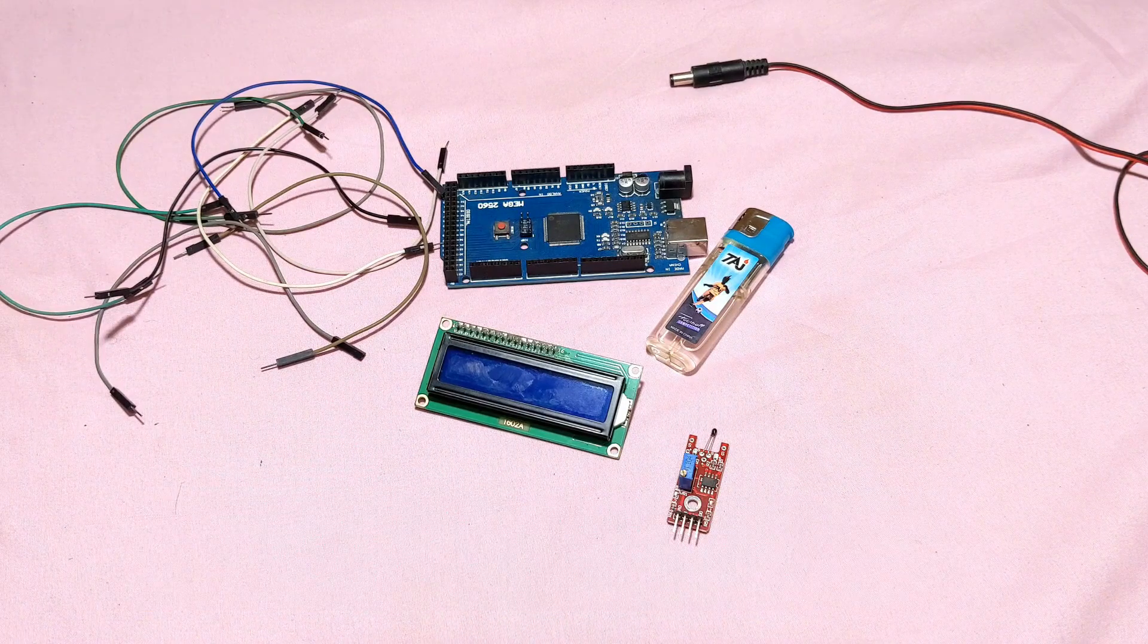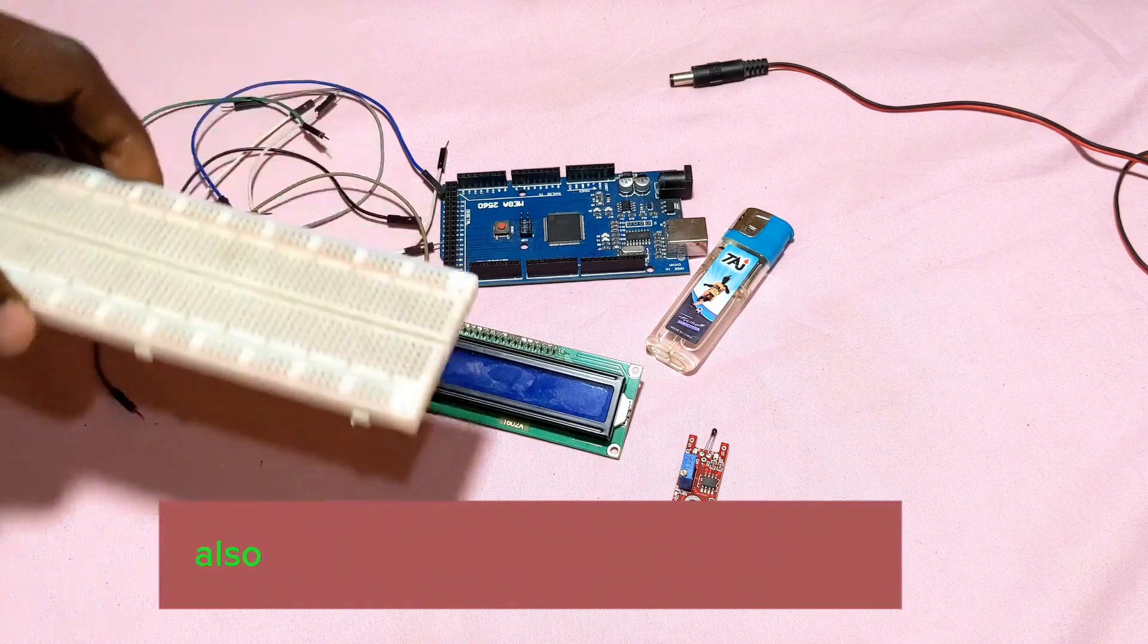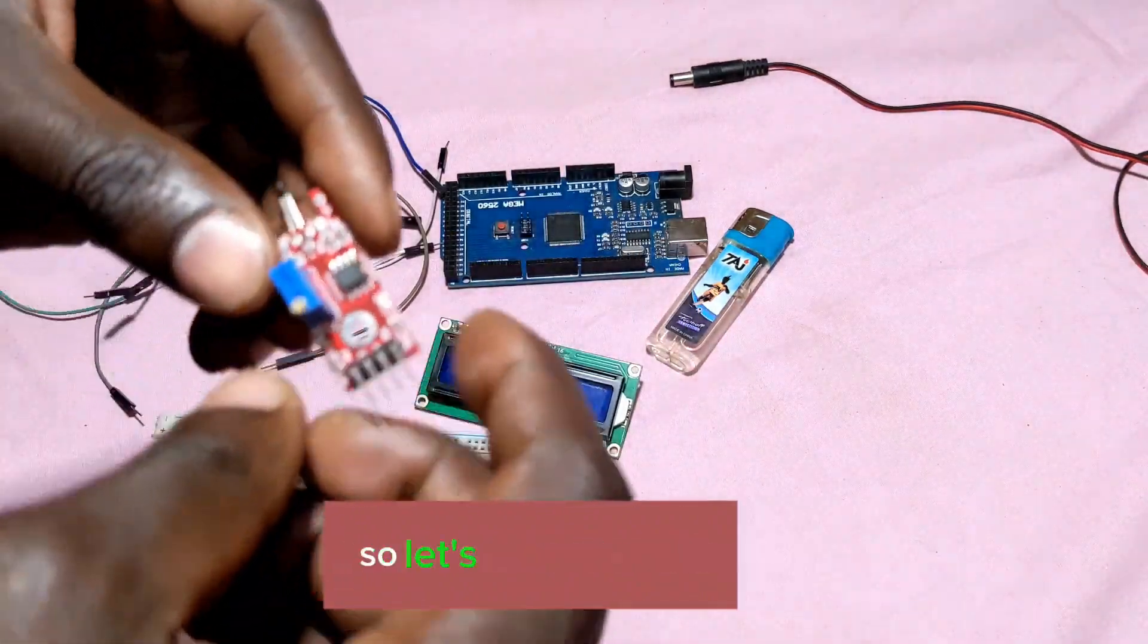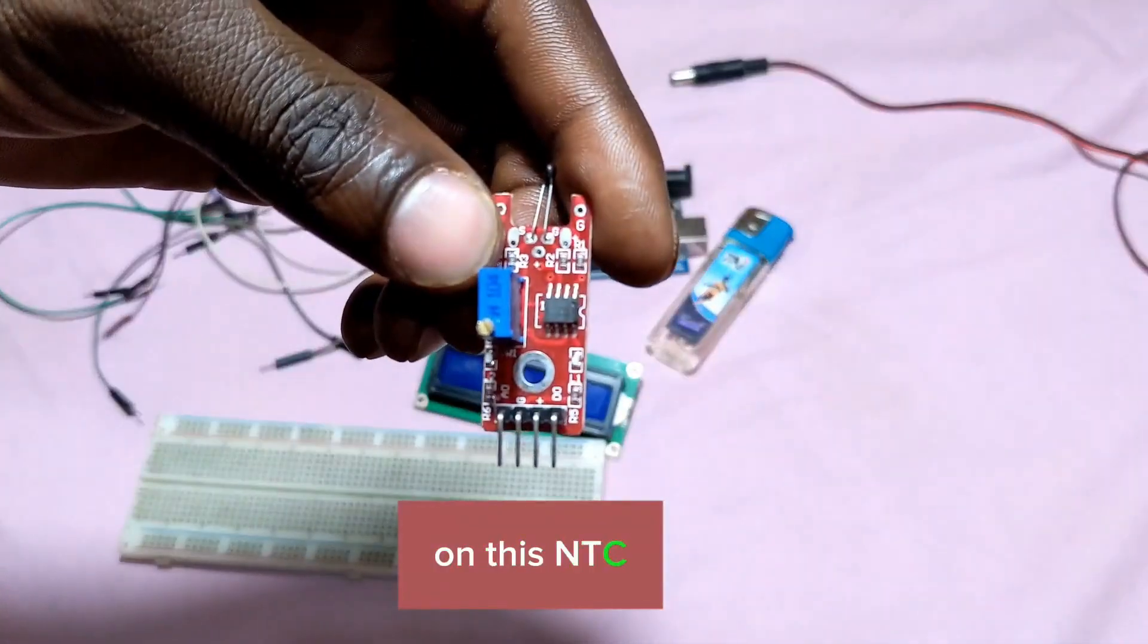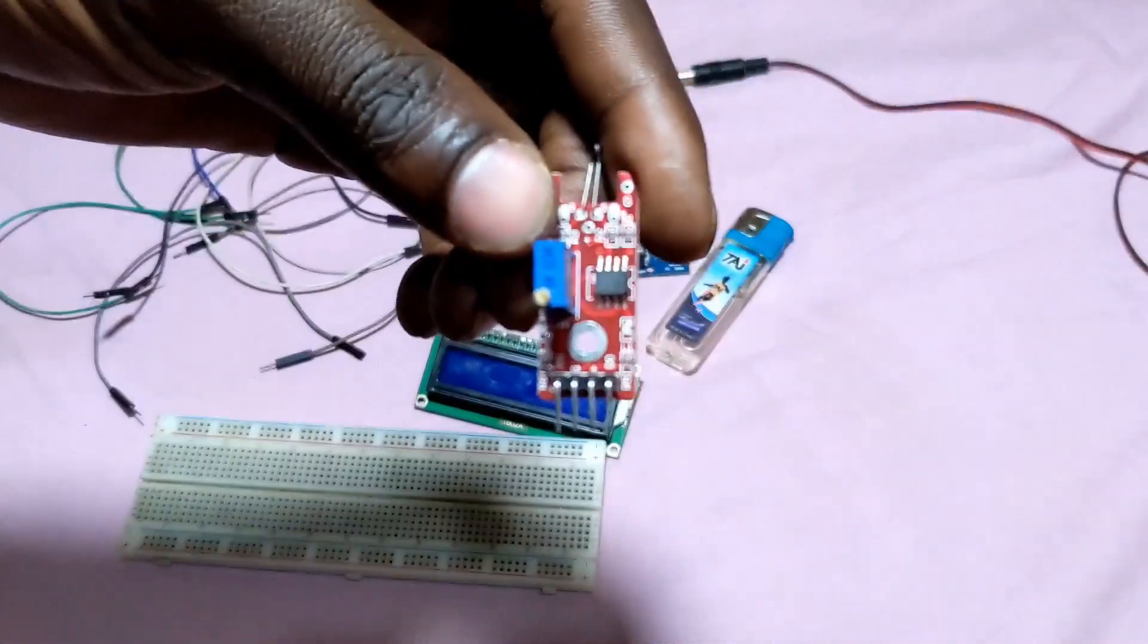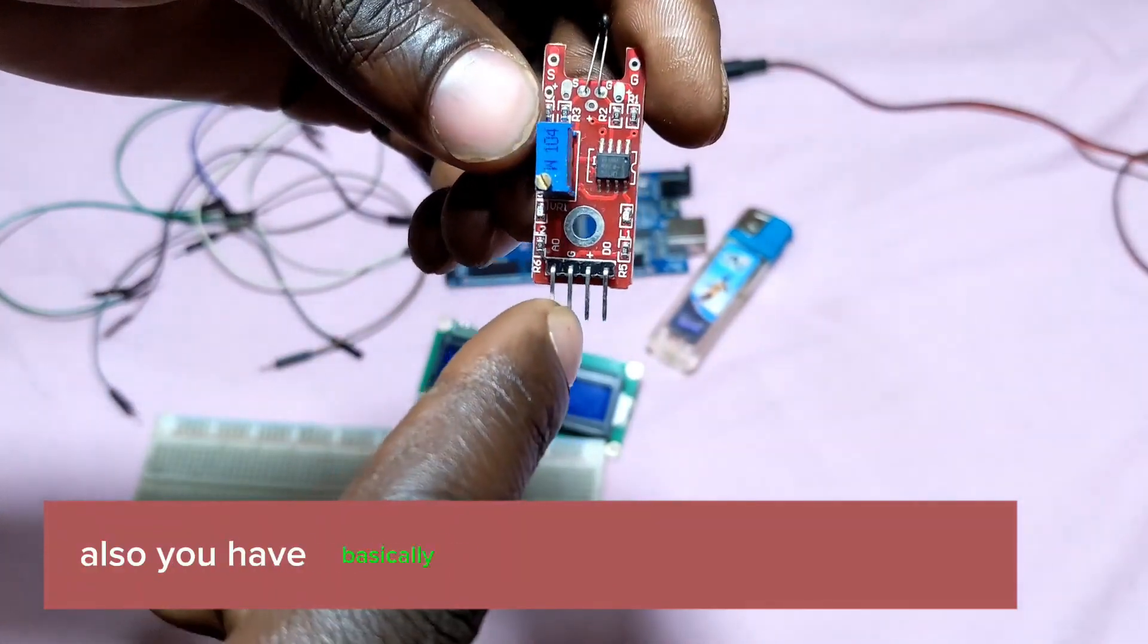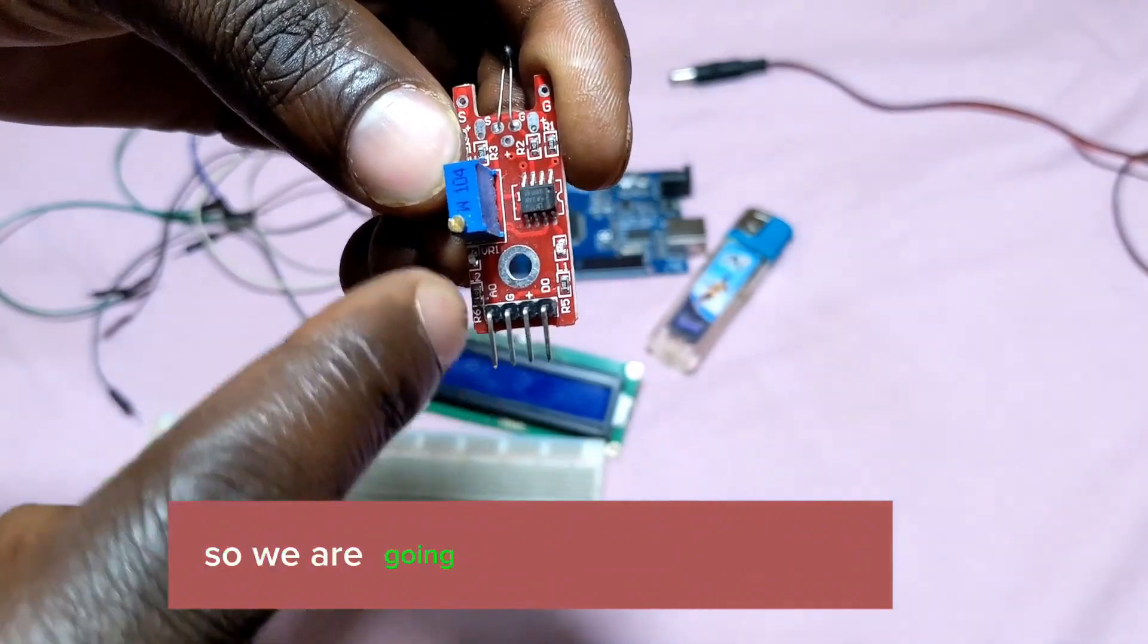First, as I said, you need to have a breadboard. Let's check on this NTC thermistor - you have analog pins, you have base, ground, VCC, and digital pins. We are going to use the analog pins.